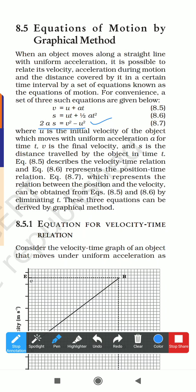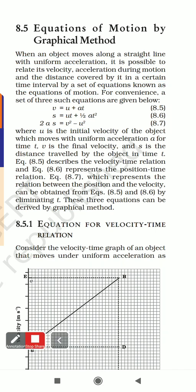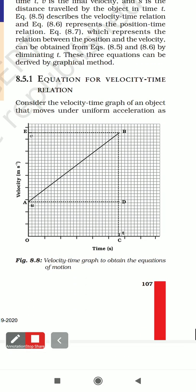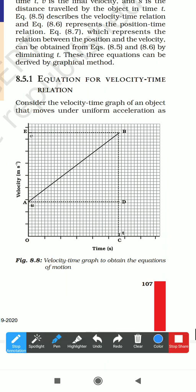The definition of equations of motion: when an object moves along a straight line with uniform acceleration, it is possible to relate its velocity, acceleration, distance covered, and time interval by a set of equations known as equations of motion. For better understanding we will study the graph.